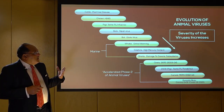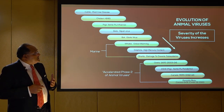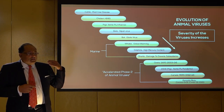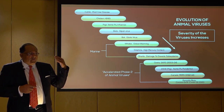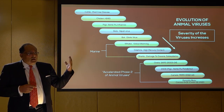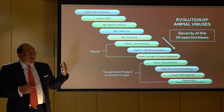Good morning. Today we're talking about the evolution of animal viruses, which basically starts with the human consumption of cattle. This leads to Creutzfeldt-Jakob disease — the mad cow disease — which leads to dementia and death.